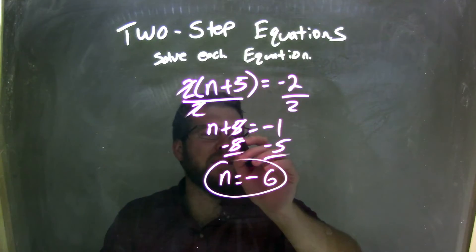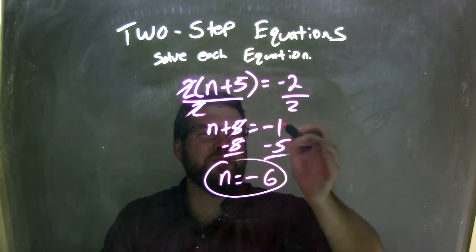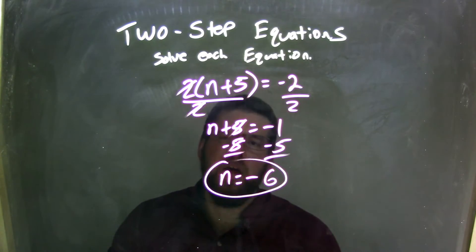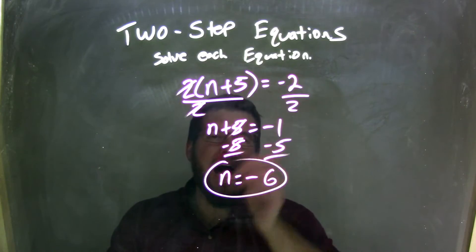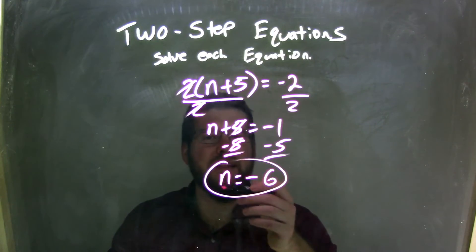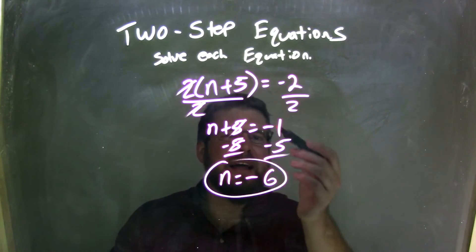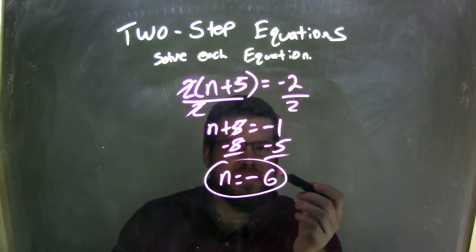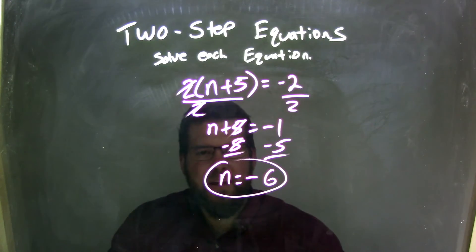Leaving me with an n plus 5 on the left, and then negative 2 divided by 2 to be a negative 1 on the right. I then settled it as n plus 5, opposite of addition's subtraction, so I subtracted 5 to both sides, canceling out the 5 to the left, leaving me with the n equals negative 1 minus 5, which is negative 6, and so my final answer is n equals negative 6.